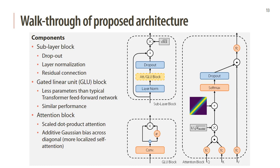Some architectural details: each sub-layer block consists of a dropout layer, layer normalization, and a residual connection. Gated linear units required fewer model parameters and obtained similar performance compared to the feedforward network in the original transformer. For the attention block, we use standard scaled dot-product attention with an additional additive Gaussian bias across the diagonal, whose standard deviation is learned during training. We do this to favor more localized self-attention, assuming that time steps closer together should affect each other more.